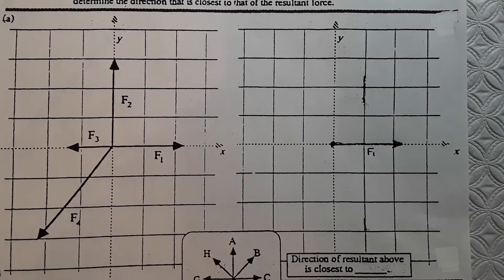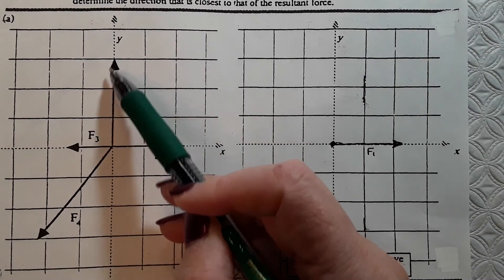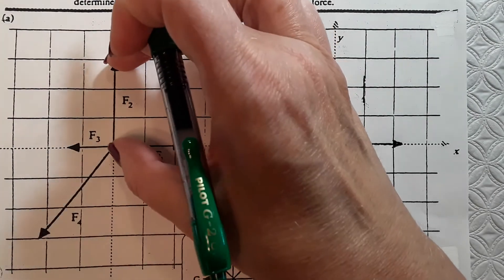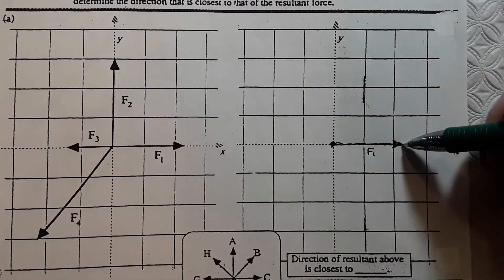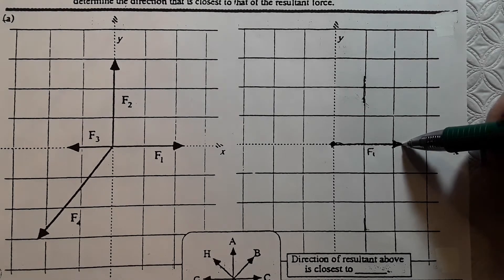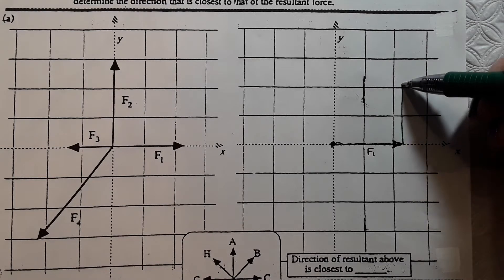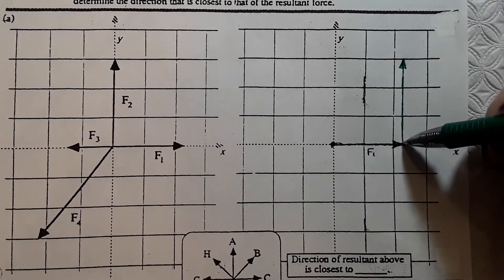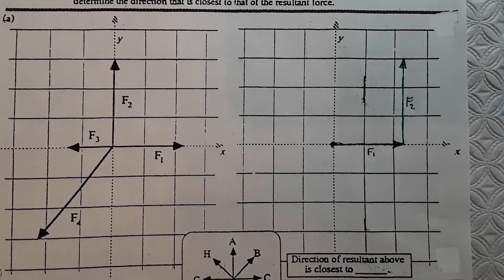Now, I'm going to switch colors. If you've got colored pencils, I'd suggest you use them. F2 is one, two, three squares long and points straight up in the positive y direction. So, what I'm going to do is, I'm going to put the tail of F2 on the tip of F1. So, they'll be tip to tail. Draw it up three squares. Make your arrowhead. That's F2. Two down, two to go.